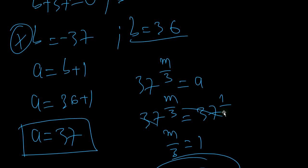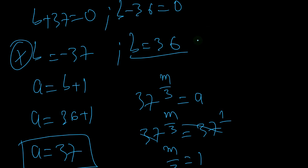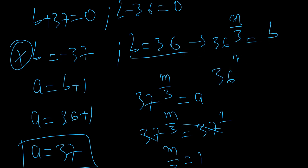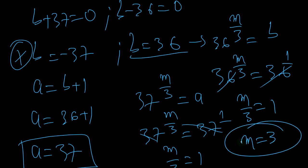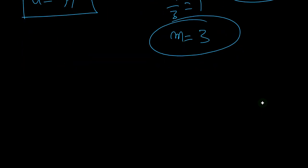We can confirm using b: 36 to the m over 3 equals b equals 36, so 36 to the m over 3 equals 36 to the 1, meaning m over 3 equals 1 and m equals 3 again.